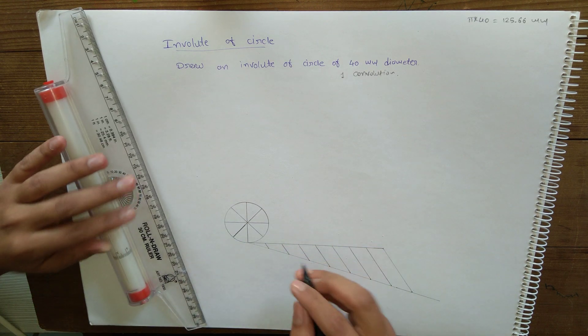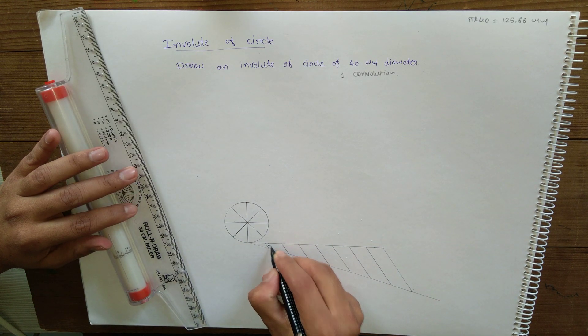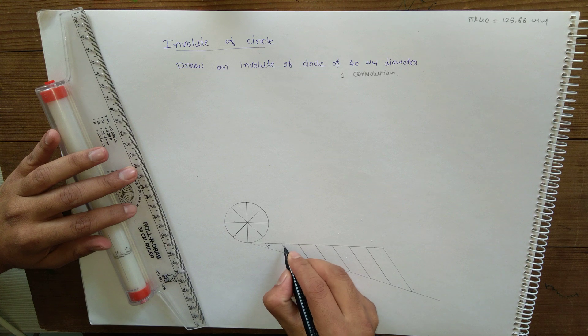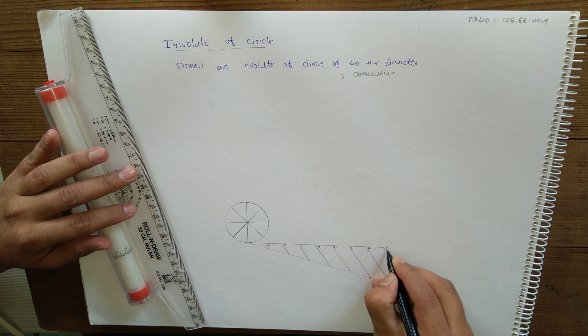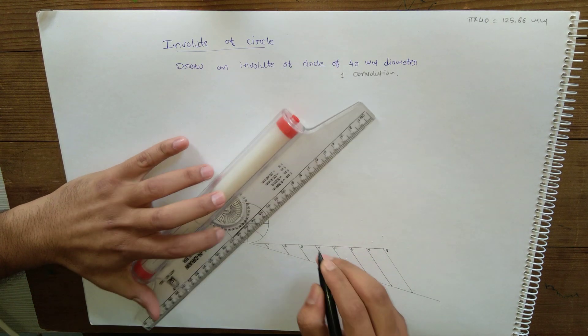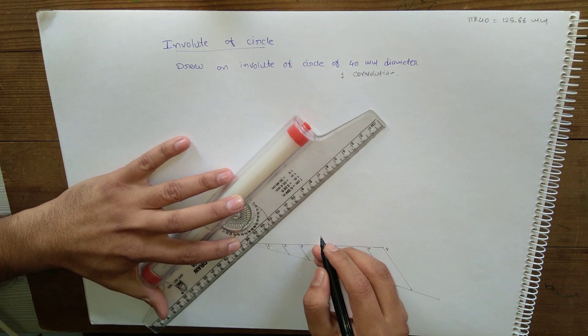So now we have 8 equal parts on the line also. Next step is to draw tangents to the circle from each and every point on the circle. Tangents can be of any length.